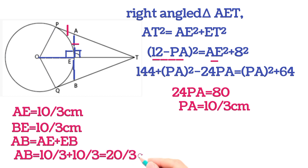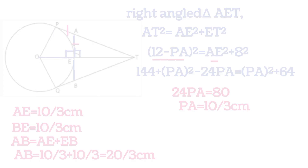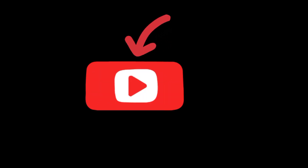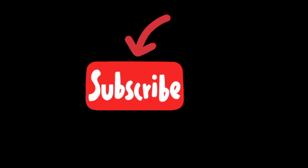AB = AE + EB = 10/3 + 10/3 = 20/3 centimeters. That is the answer. If you liked the video and found it easy to understand, please give it a thumbs up and subscribe to my channel for more such interesting questions. Thanks for watching.